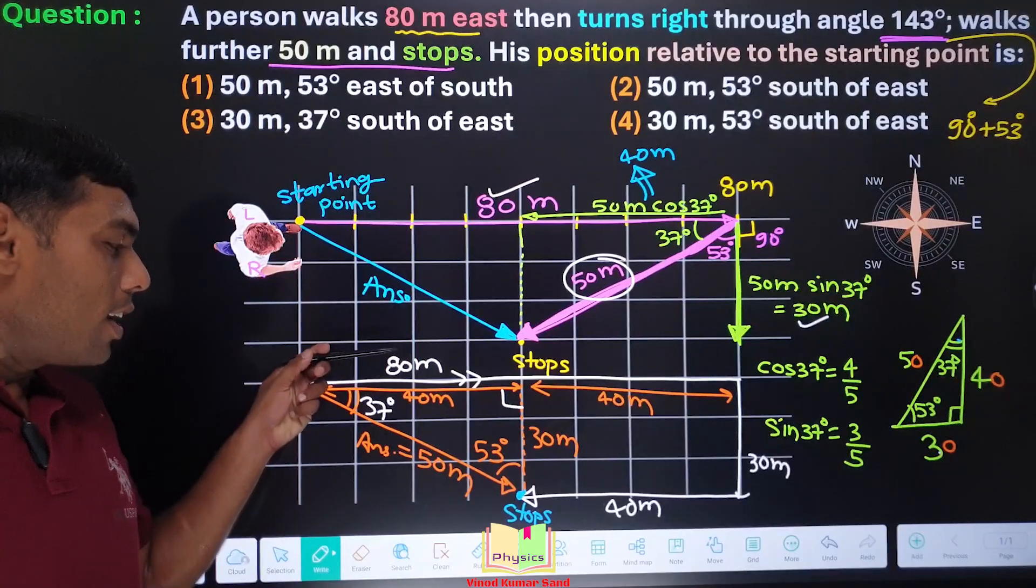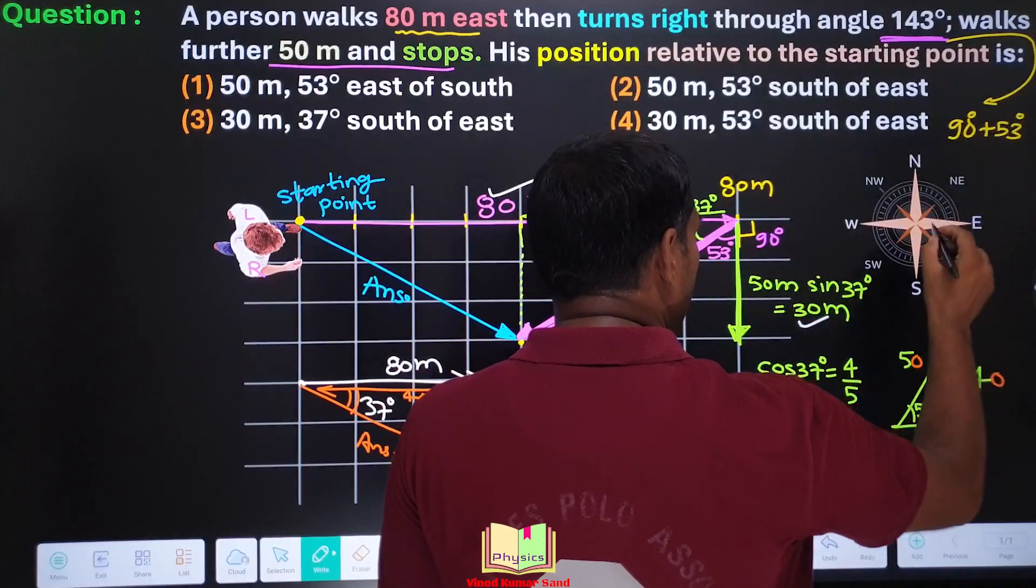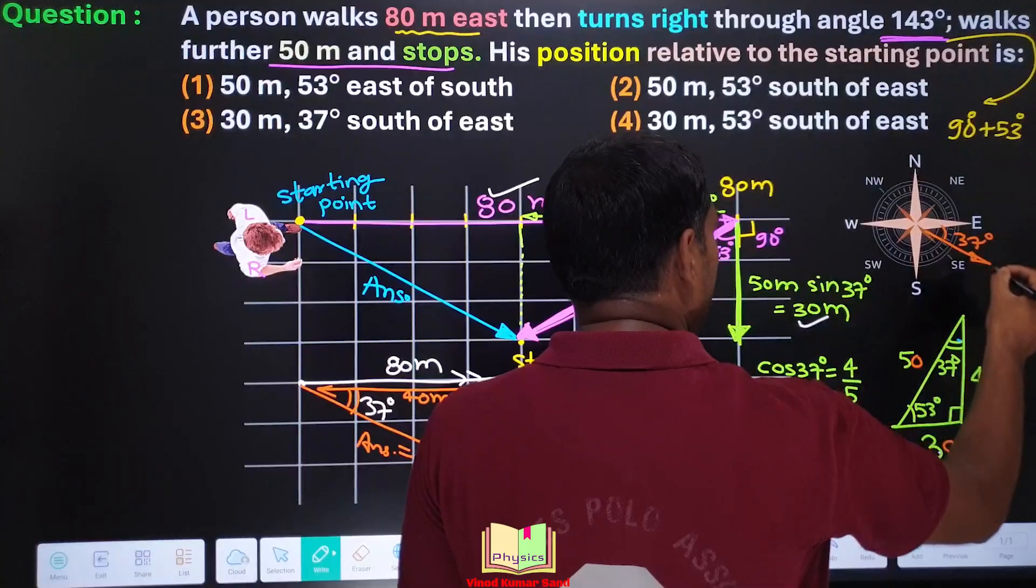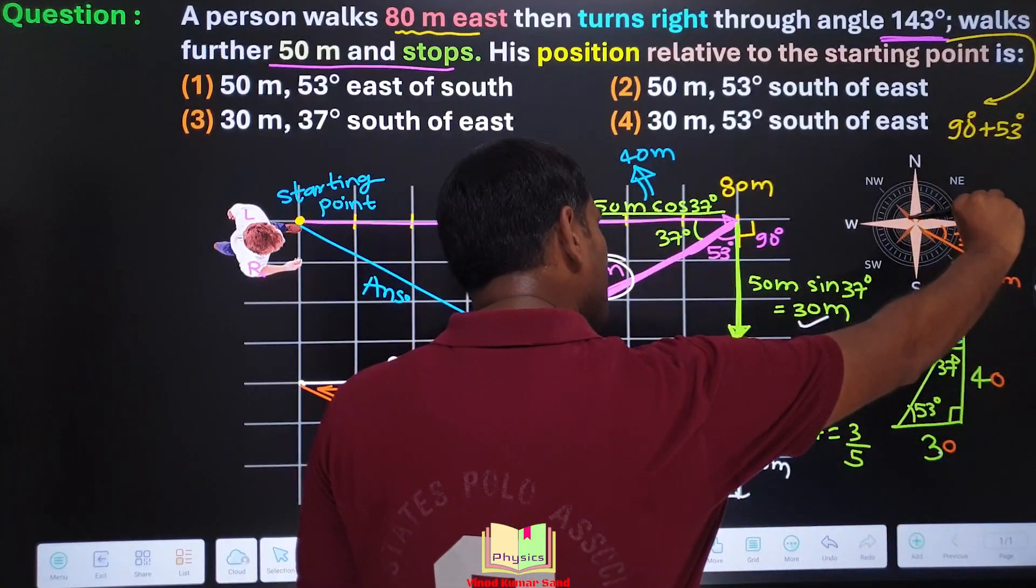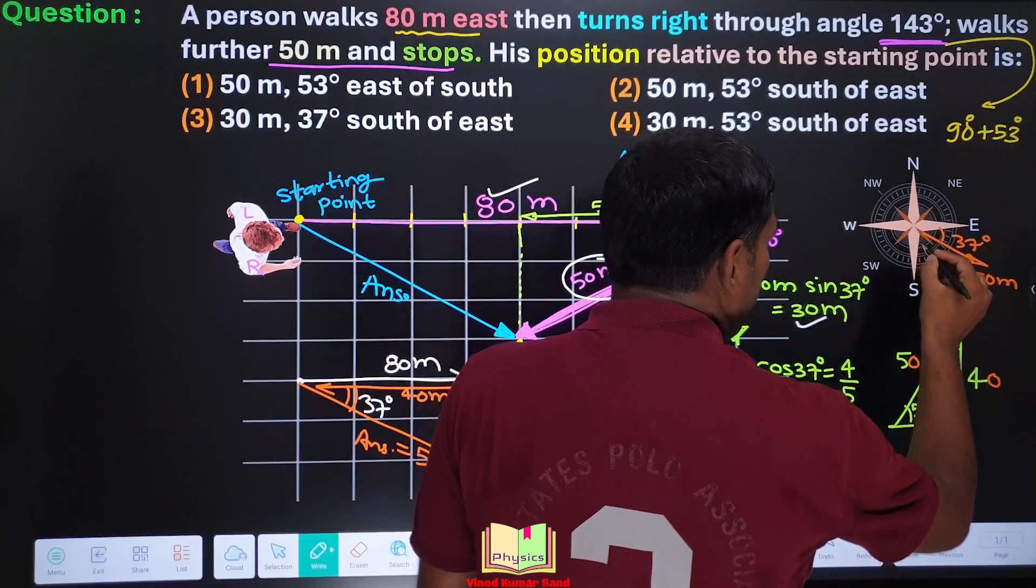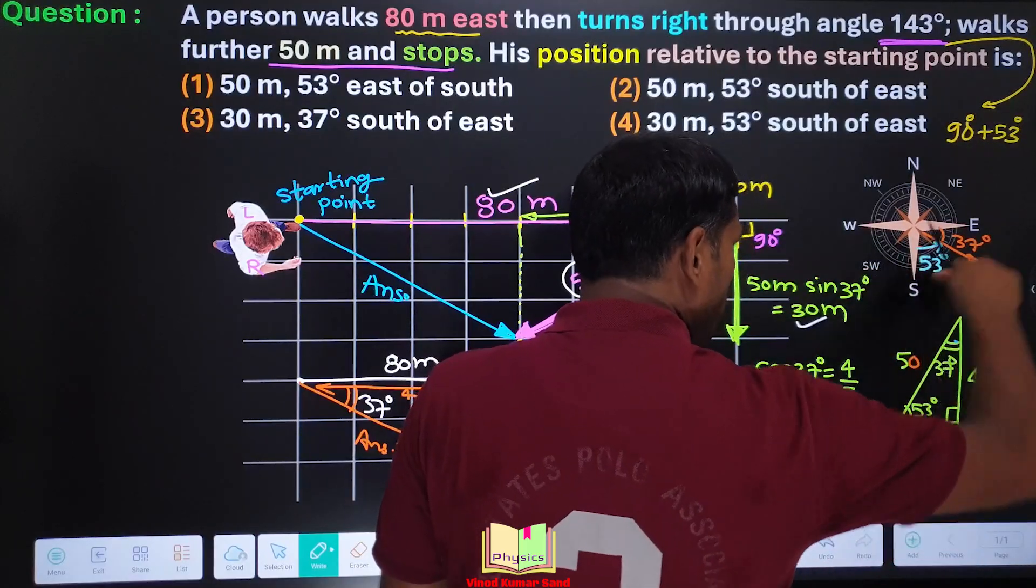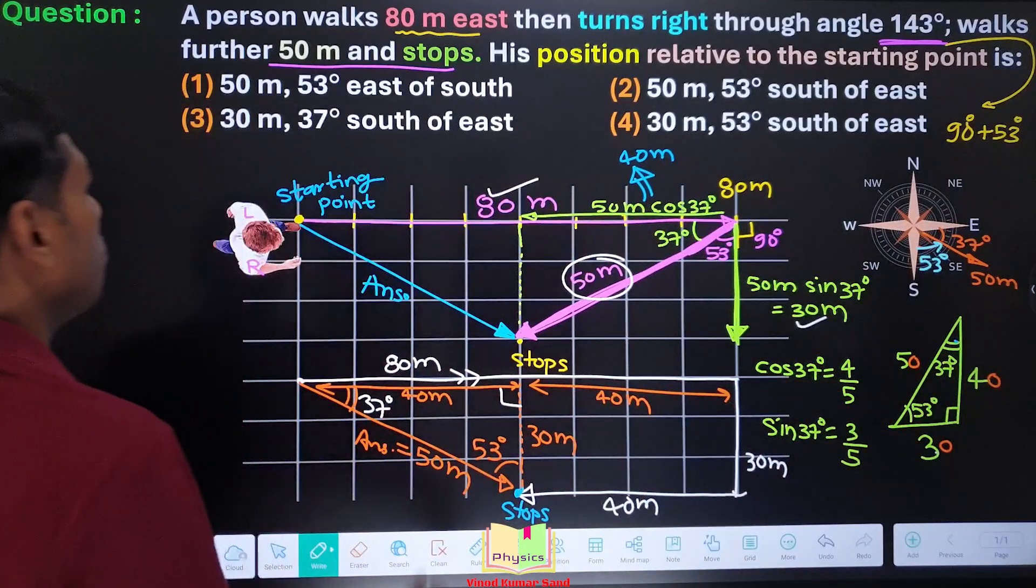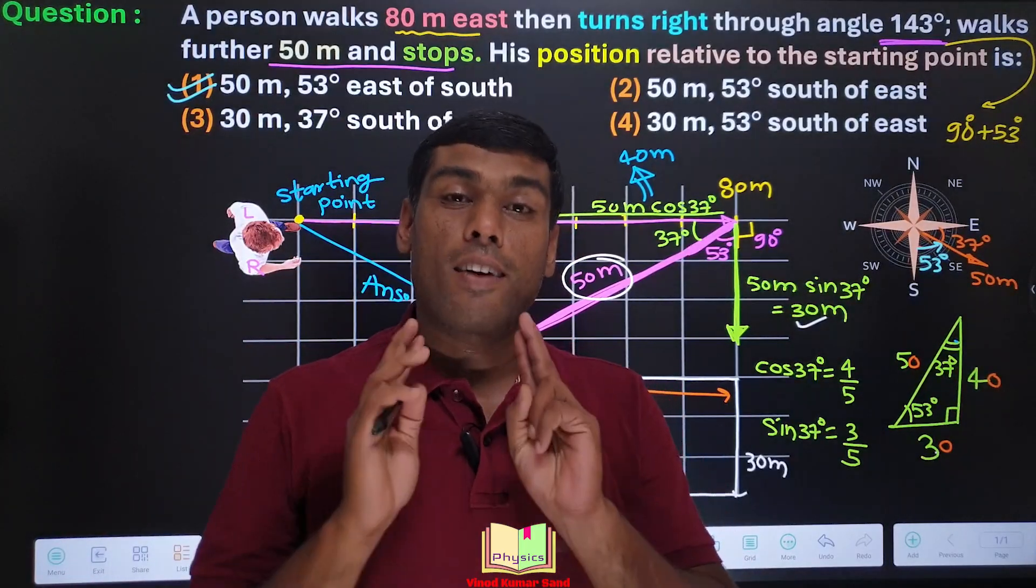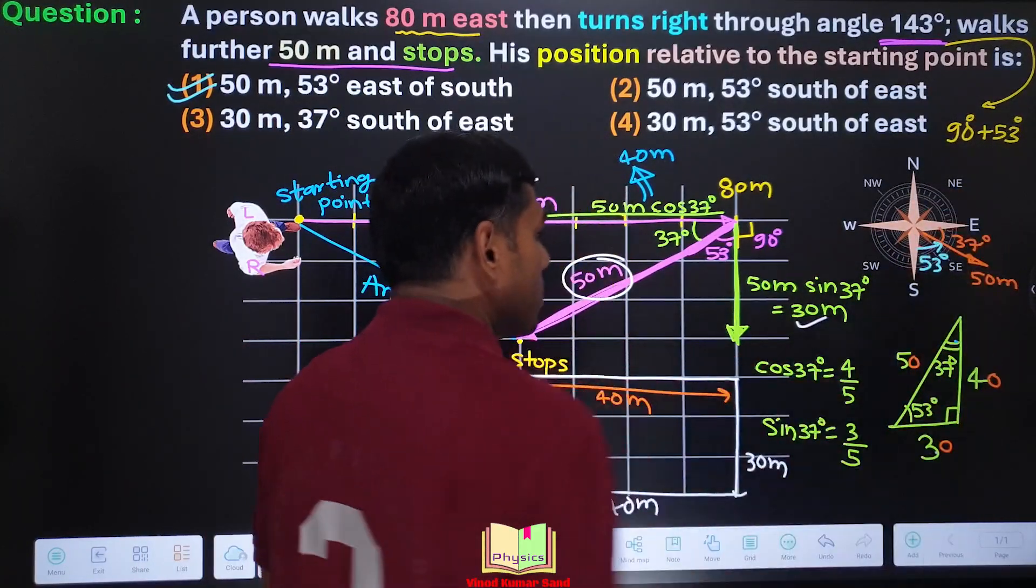Now how to read it? His position is 37 degrees south of east. Can you check it? In this kind of direction we were having the data, 37 degrees and here 50 meters. So 37 degrees south of east, or we can say 53 degrees, 53 degrees east of south. So it matches with the first option.